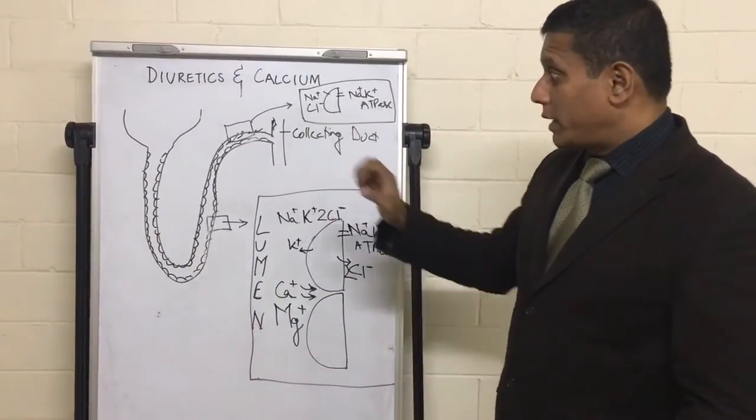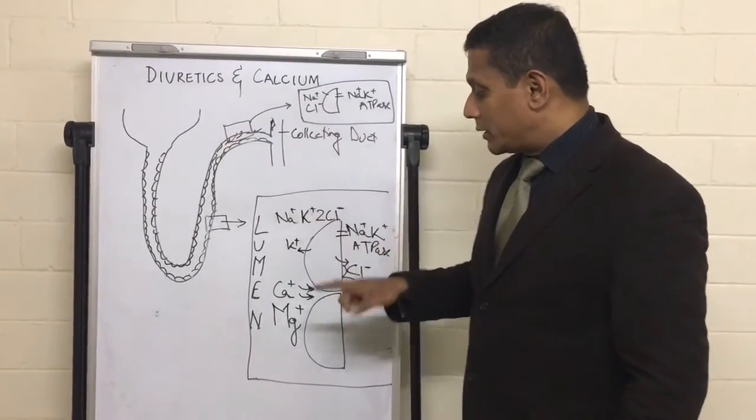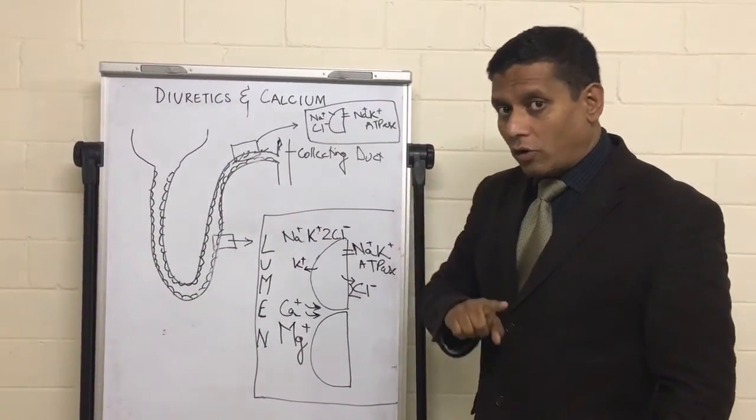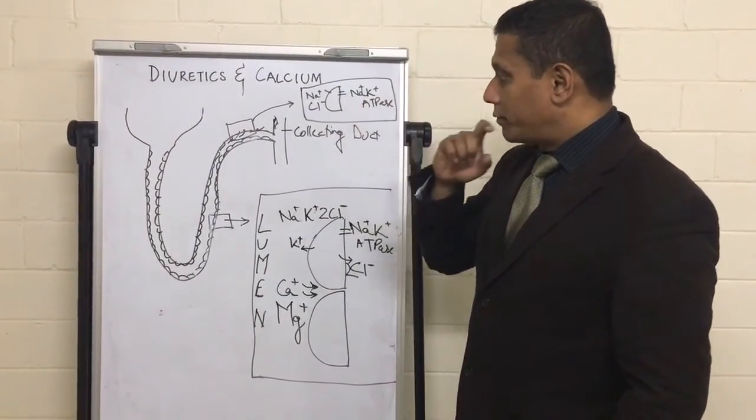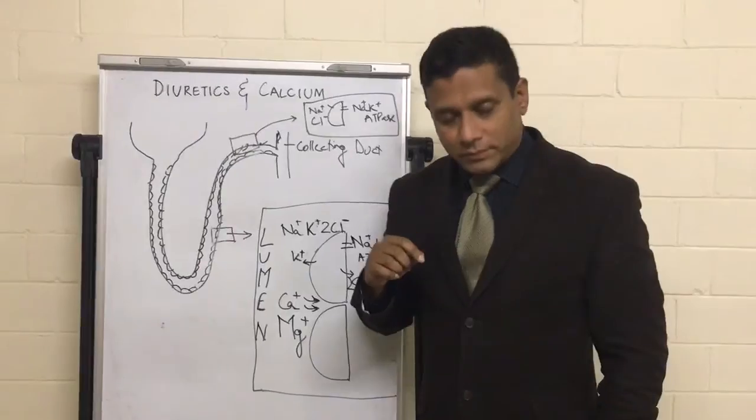So that hopefully explains why when you put people on thiazide diuretics, they can get hypercalcemia. And that hopefully also tells you why furosemide helps to get rid of calcium in the urine. Thank you.